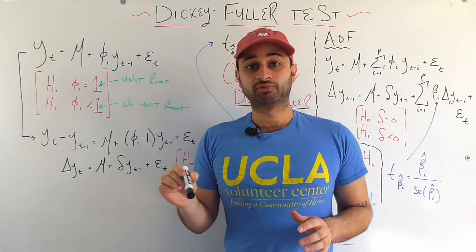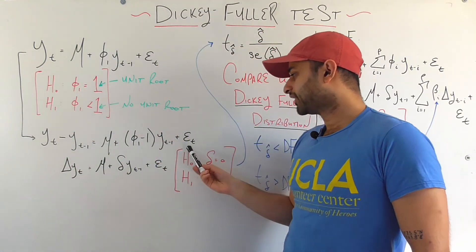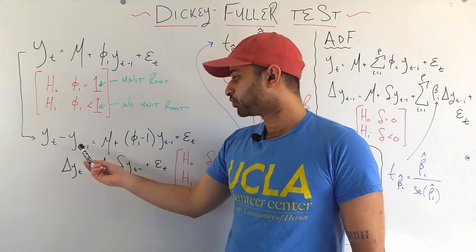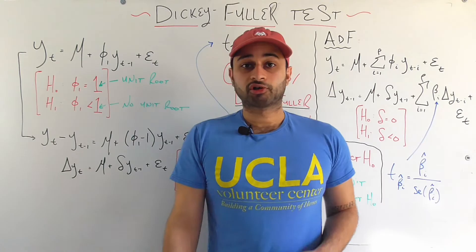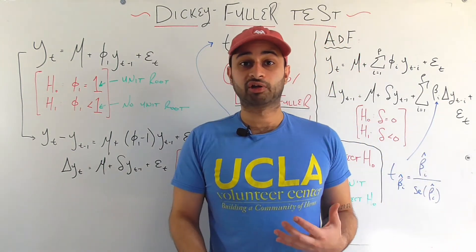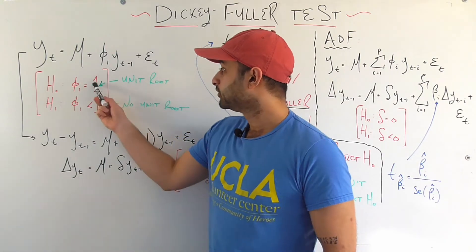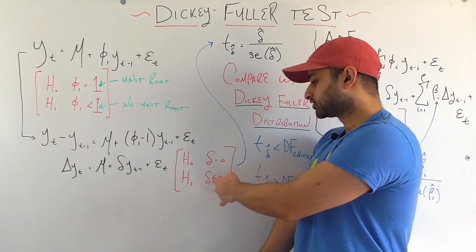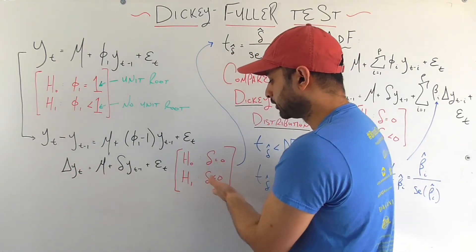The first thing we do is subtract y_{t-1} from both sides — from both the left and right hand sides. We introduce the notation delta y_t which equals y_t minus y_{t-1}. We also introduce delta which is simply equal to phi_1 minus 1. This transformed version lets us rewrite the null and alternative hypothesis in terms of delta: if phi_1 equals 1 then delta equals 0, and if phi_1 is less than 1 then delta is less than 0.